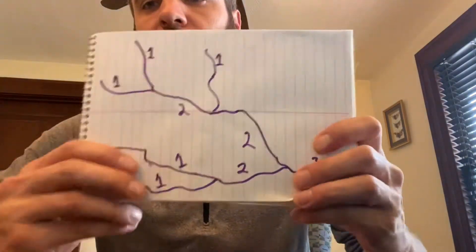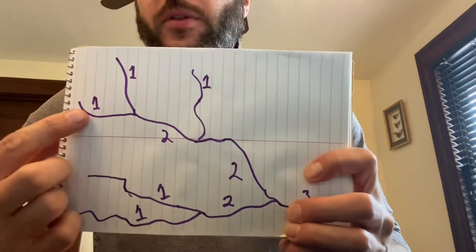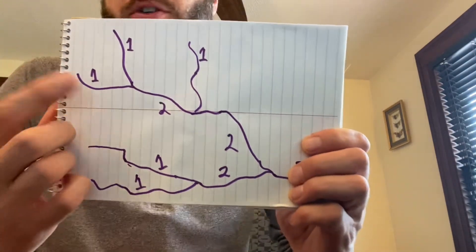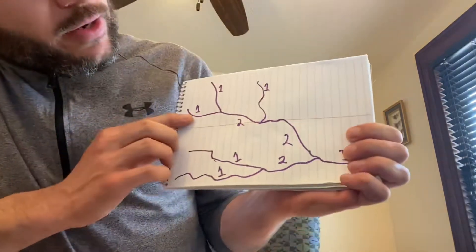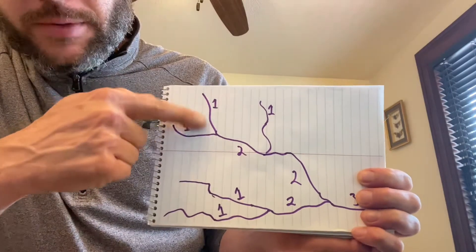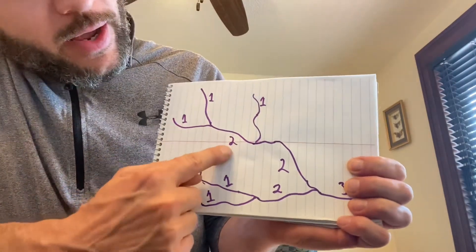So if it's a first order stream, it is the furthest stream up in the watershed — the smallest stream. A lot of times these are ag ditches, or small streams that go through a wooded area that are totally shaded cold water. The smallest stream furthest up in the watershed is a first order stream, and then to become a second order stream you have to have two first order streams come together.